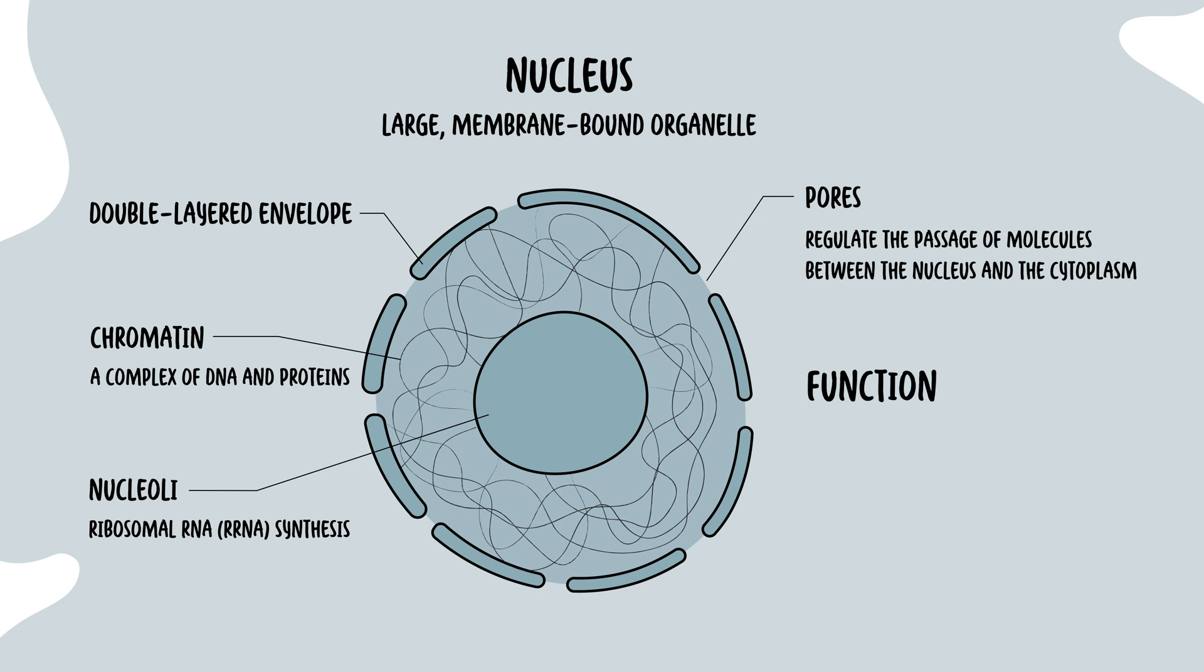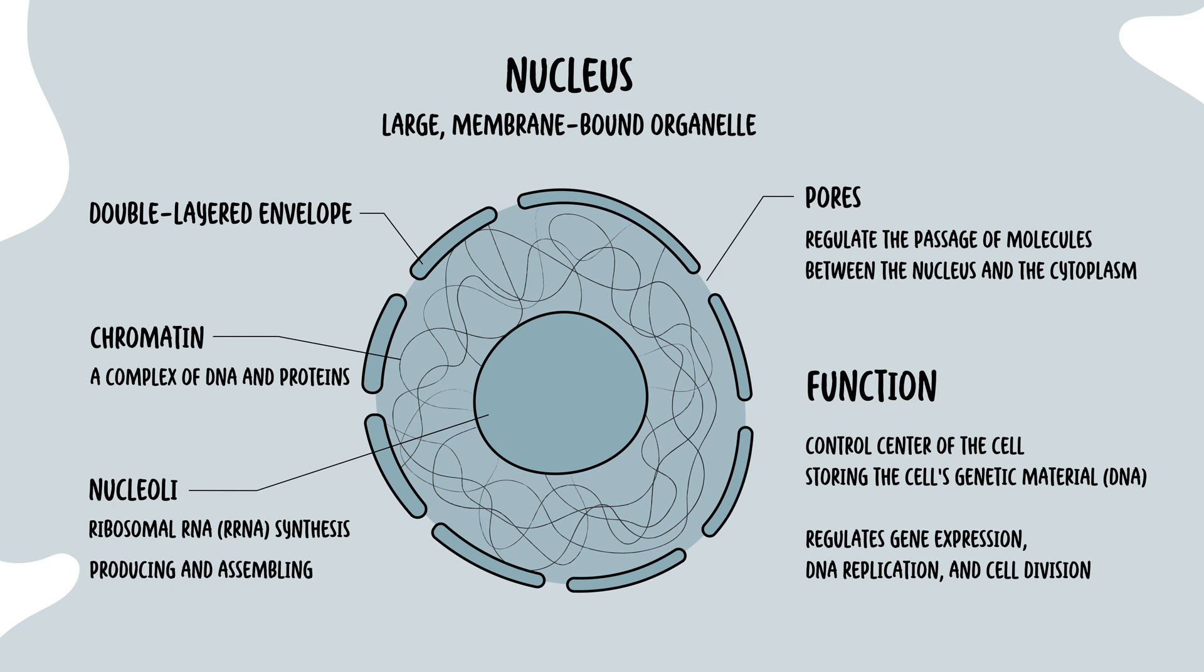The nucleus itself acts as a control center of the cell, storing the cell's genetic material, which is our DNA. It regulates gene expression. It's important in DNA replication and cell division. The nucleolus within the nucleus is responsible for producing and assembling ribosome components.